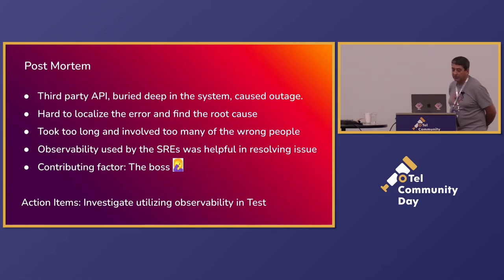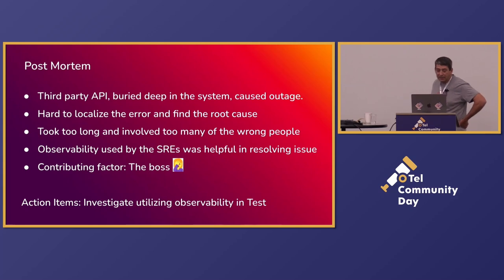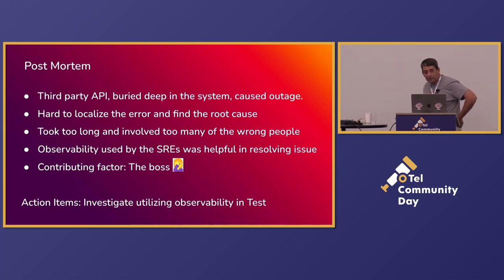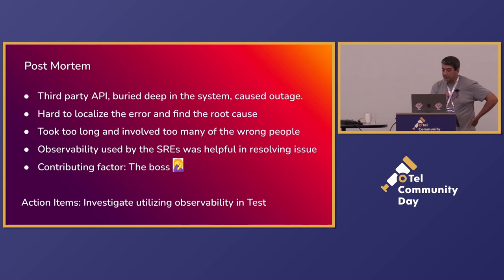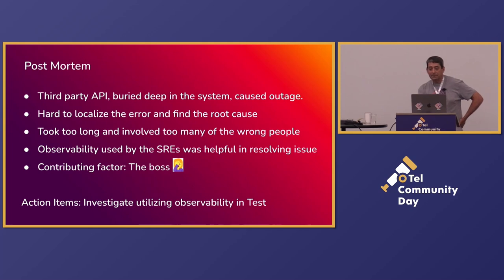So let's do a post-mortem of this. A third-party API buried deep in the system caused the outage. It was super hard to localize the error and find the root cause. It took too long and involved too many of the wrong people. Observability, which is normally just used by the SREs, was helpful in resolving the issue. And a contributing problem factor is the boss — that's typically a contributing factor.